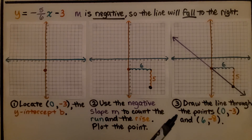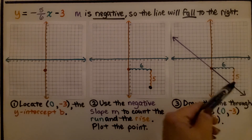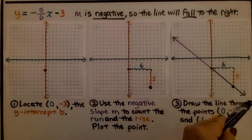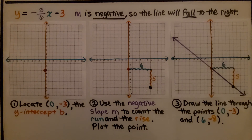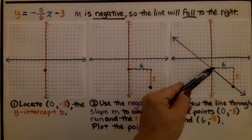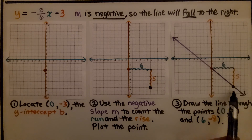Now we draw the line through the points — through this point and this point. We know it's going to fall to the right because it's negative. Our first ordered pair is (0, -3) and our second ordered pair is (6, -8).